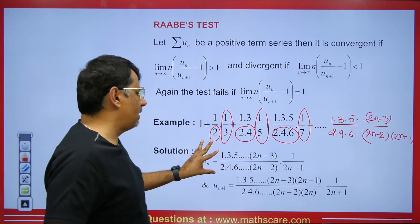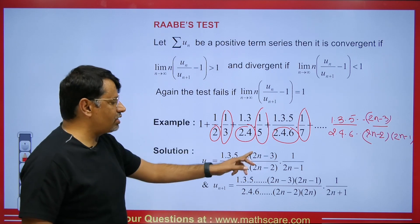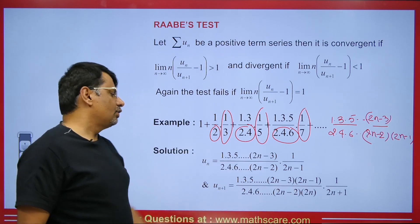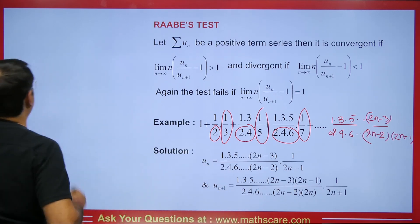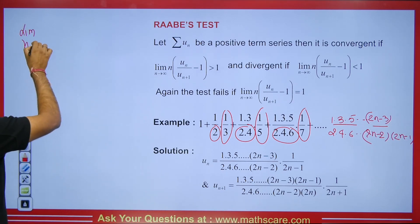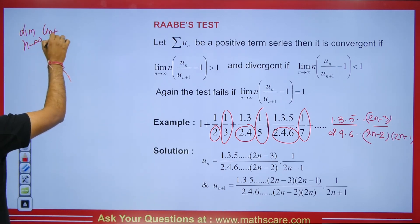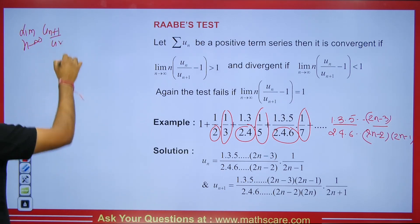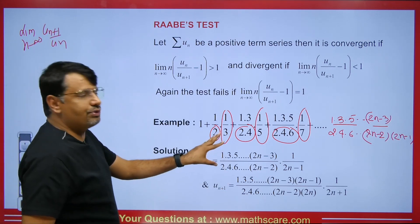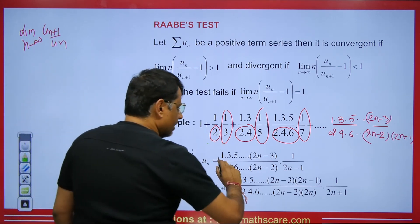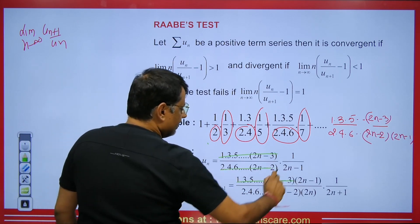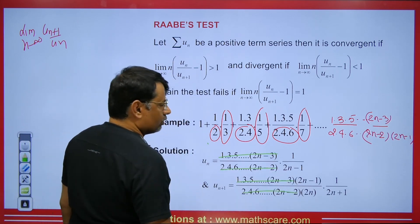Now we apply the D'Alembert Ratio Test: the limit as n tends to infinity of u_{n+1} / u_n. When we divide these, many terms cancel from the numerator and denominator. We are left with certain terms on top and certain terms on the bottom.